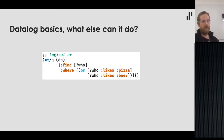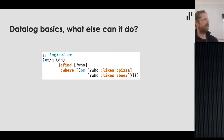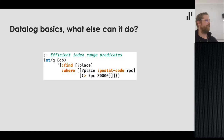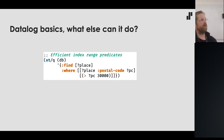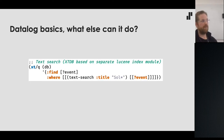A whirlwind tour of what else Datalog can do: where clauses are ANDed together by default, but we can also do logical OR. There are efficient index range predicates — for number, string, or date values, we can query with less-than or greater-than operators and they'll be efficiently pulled from the index.